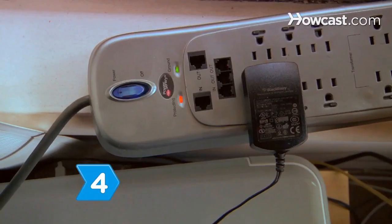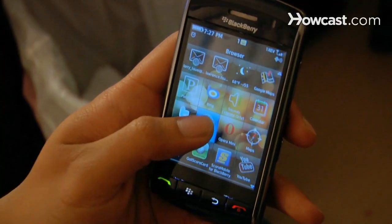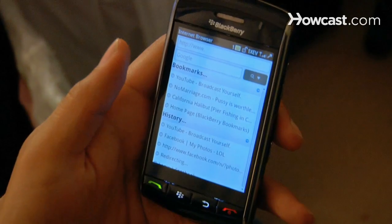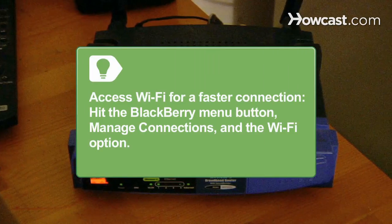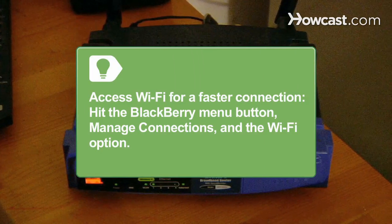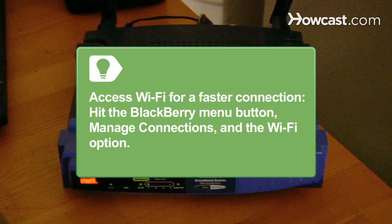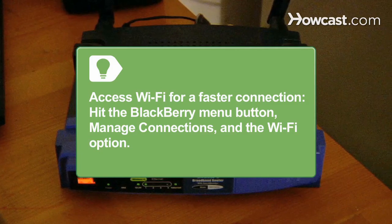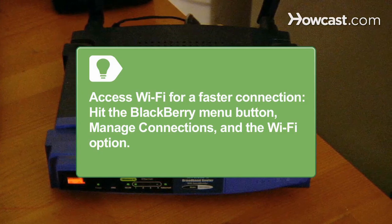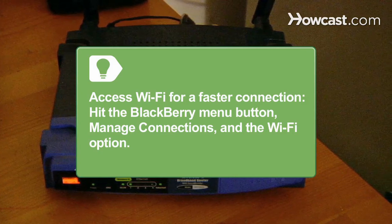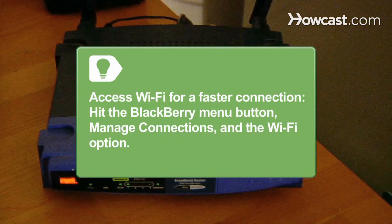Step 4. Once the battery is charged, turn on your BlackBerry and go to the main menu. Using your cell phone provider's service, you can start using the Internet immediately by clicking the browser icon. Accessing a surrounding Wi-Fi network can speed up your connection. To do this, hit the BlackBerry menu button and click Manage Connections, then hit the Wi-Fi option. You'll know it's on when you see a checkmark — the red X has turned into a white line, and it says On.